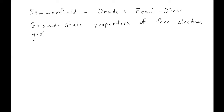You might ask why we should care about the ground state properties of the free electron gas. After all, human-compatible temperatures are of order 300 Kelvin, which is obviously not T equals zero. But remember that this characteristic temperature T-naught is of order 10^4 Kelvin, which is substantially higher than room temperature, 295 Kelvin. So it's not so hard to see that the ground state properties of the free electron gas are actually relevant in many cases.